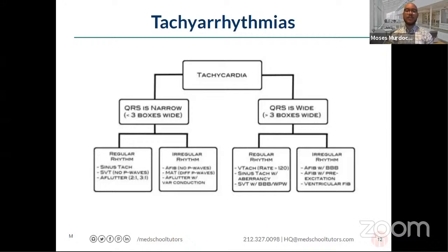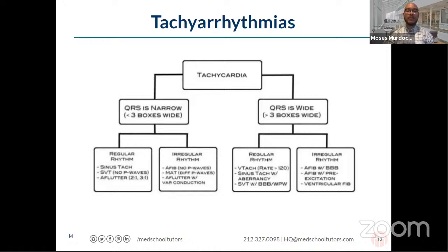For the purposes of the exam, the first question is: is the QRS narrow — less than 120 milliseconds, three small boxes — or is it wide? Starting with narrow complex tachycardia: the next branch point is rhythm, because if the QRS is narrow, it tells you that some signal is coming through from the atria or high enough in the conduction system such that the ventricles are getting stimulated in a synchronous fashion. The question is: what is the rhythm — regular or irregular?